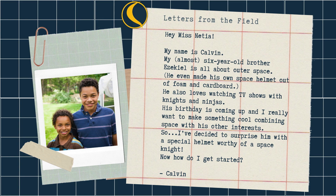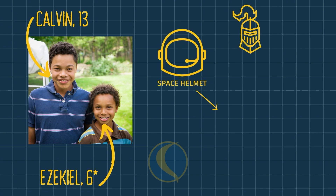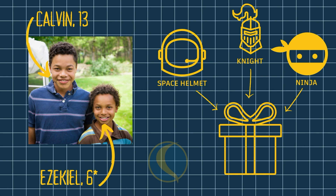How thoughtful of Calvin to surprise his brother with a custom helmet. Given all of this information, which we'll call design parameters, I think we have enough information to begin brainstorming. Brainstorming is the process of coming up with ideas. We can start by mashing up various ideas to make something new. One of his favorite TV shows is influenced by the medieval age, specifically knights. So let's tweak our design based on that — perhaps a knight's helmet, which includes a type of face shield called a visor. Now let's add a ninja-inspired element.